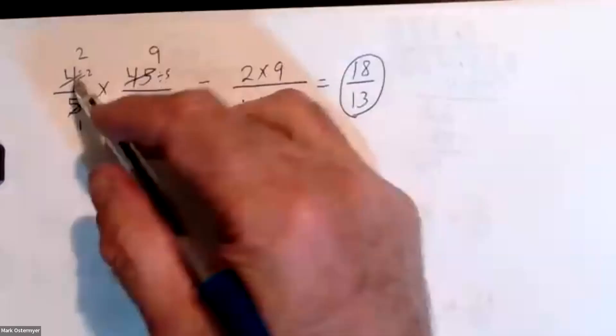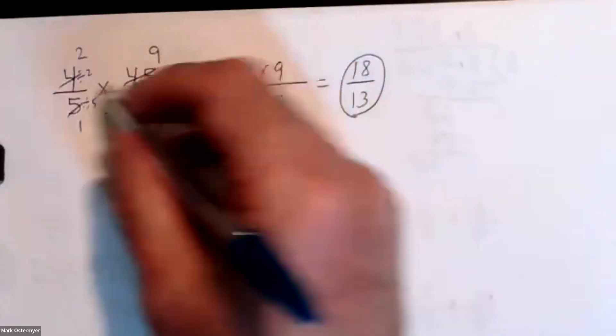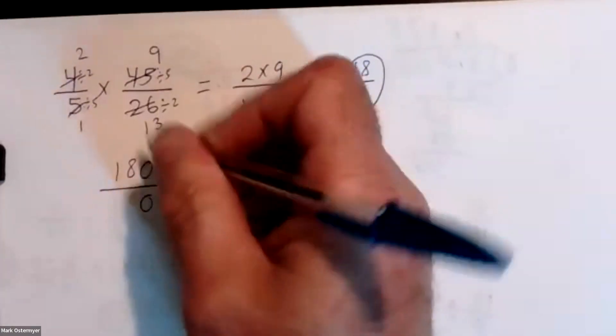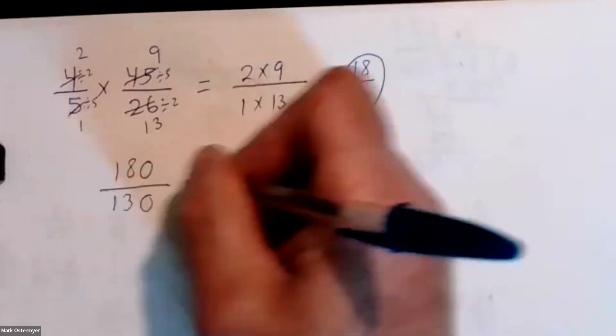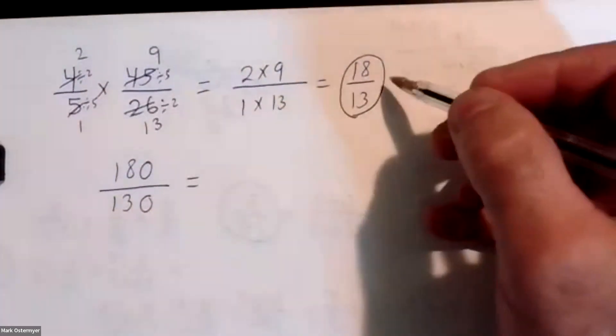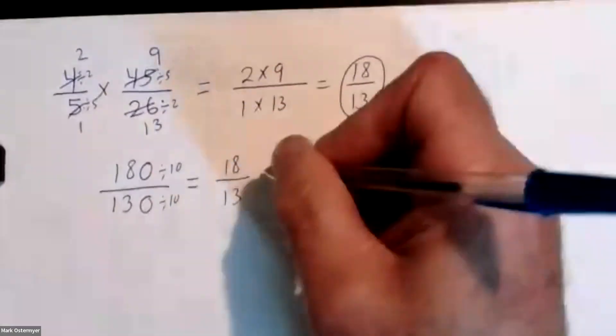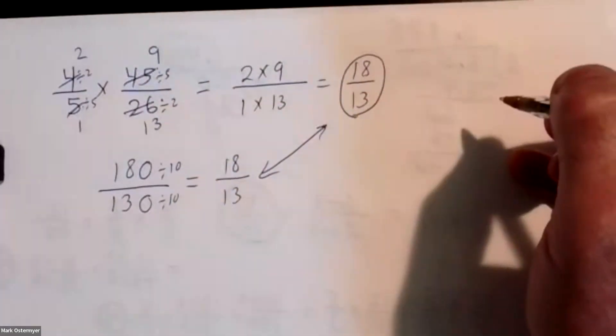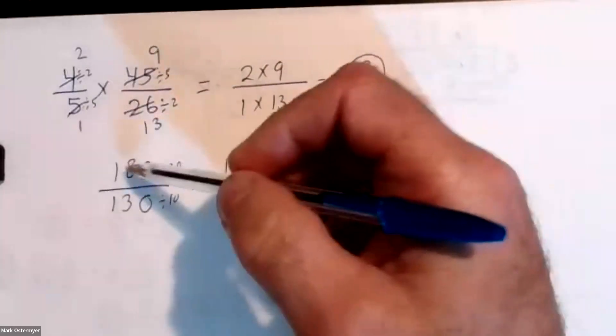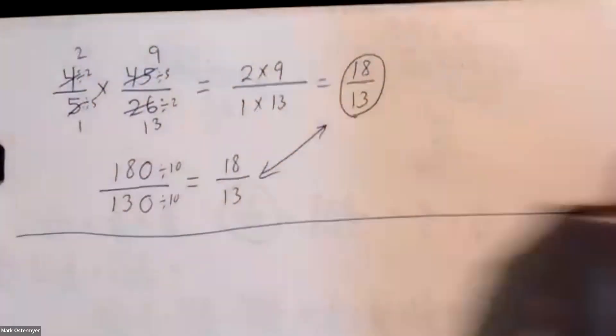Now if you did four times forty-five it's going to be a big number — 180. And five times twenty-six would be 130. Can you reduce this? It should still reduce down to the same answer. You can reduce by ten, down to eighteen over thirteen. That wasn't that bad.